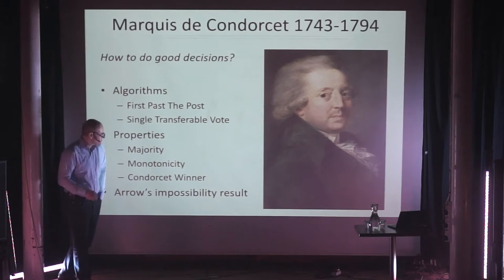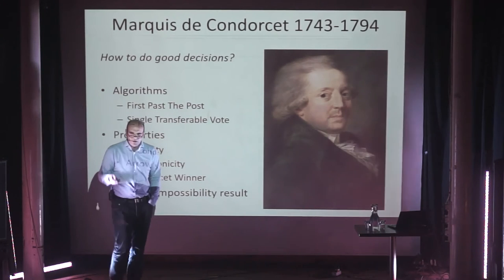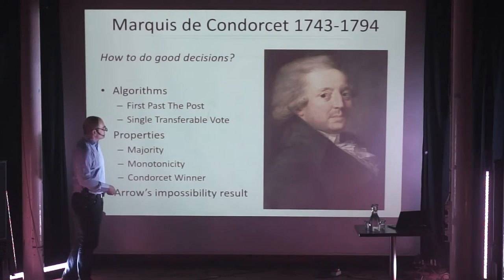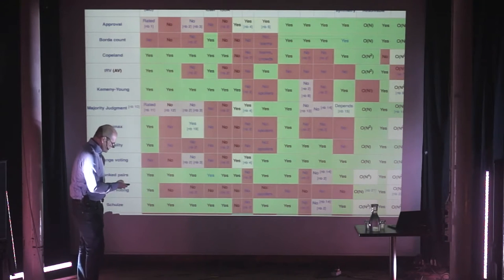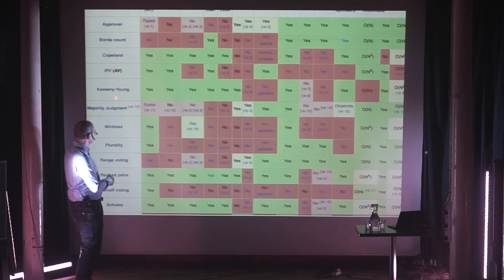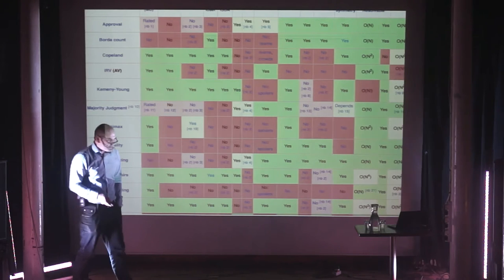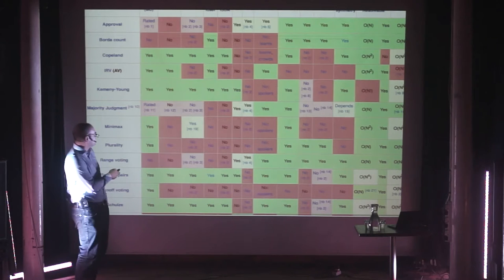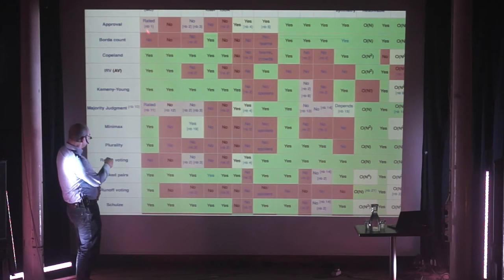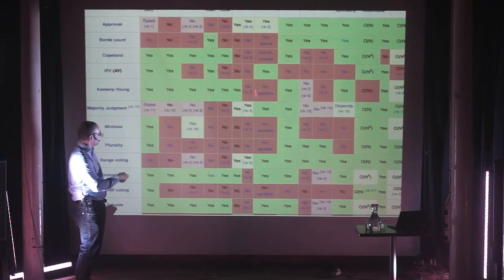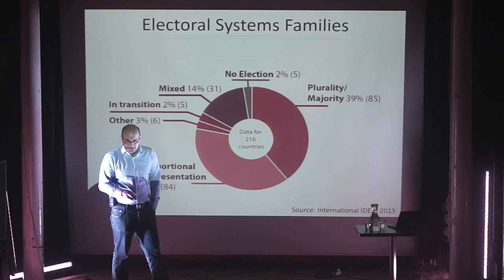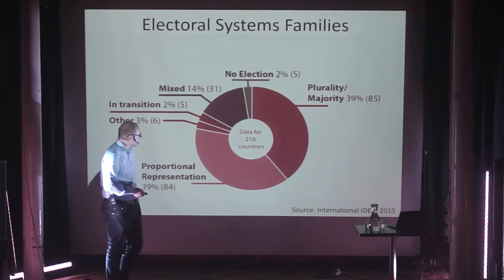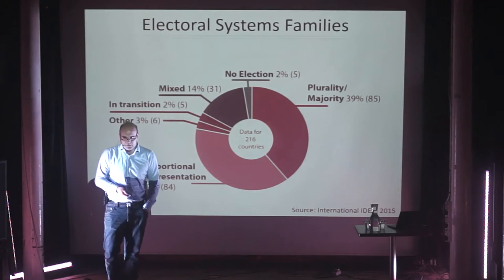Mathematically, there are certain impossibility results — you can't have all the desirable properties at once. Here's a long list of different voting schemes and their properties, where red means bad and green means good. You don't have a single scheme that's green all the way — there's always a red dot. So this is an active area of research in mathematics and economic theory, and if you're really good you can still get Nobel Prizes. The 2012 Nobel Prize was actually awarded to an economist for work in this area.